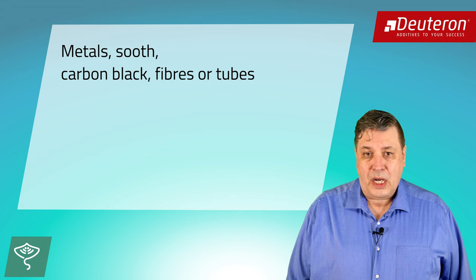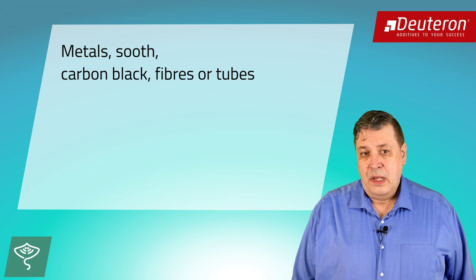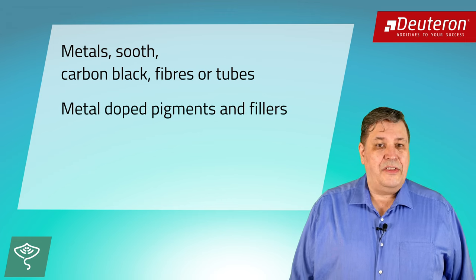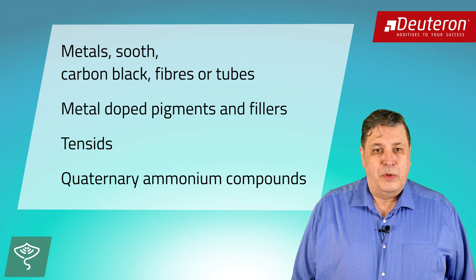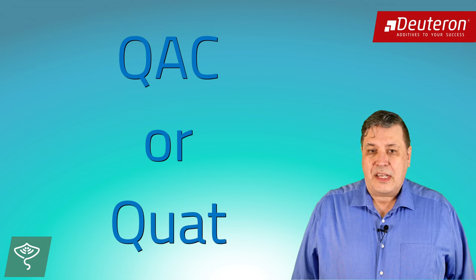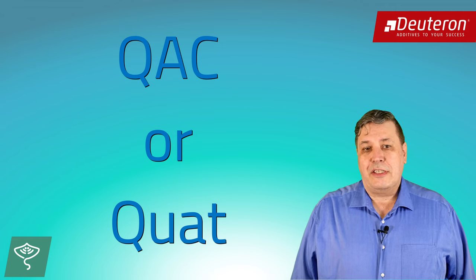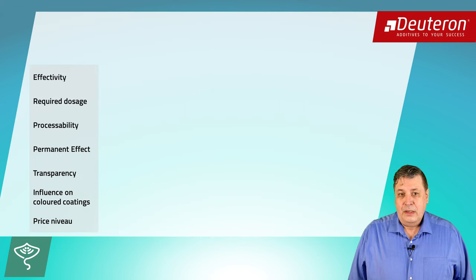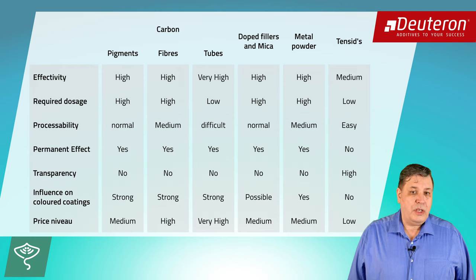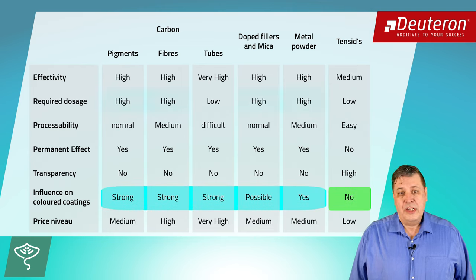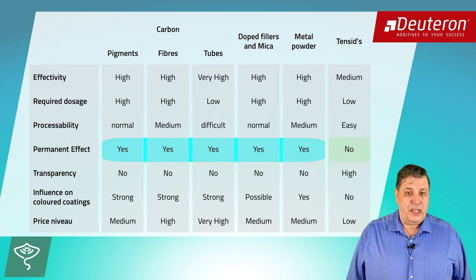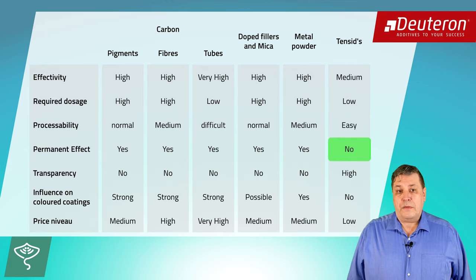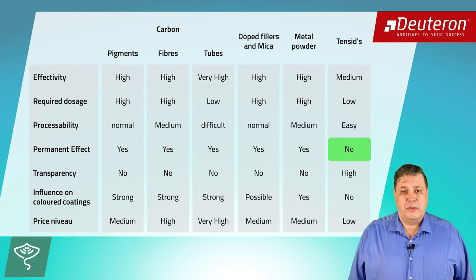This can be done by conductive substances. For example, metals, soot, carbon black, carbon fibers or tubes, metal-doped micropigments and fillers, and the tensile-like organic phosphates or succinic acid esters, and the large product group of quaternary ammonium compounds — in short, quads. All these substances have special advantages or disadvantages, as shown in this table. Most pigments, metals and carbon products will cause dark discoloration and require high dosages due to the needed contact between the particles. But solids are permanent additives, whereas the liquid quads are often not permanent, but often active for years and very suitable for transparent and bright systems.